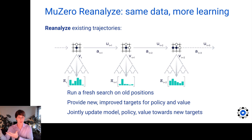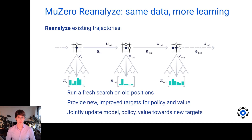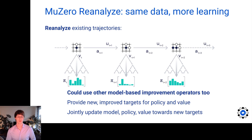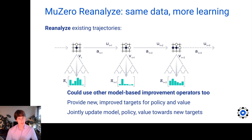Given this newly updated network, we can then go back and again compute fresh improved targets using the same trajectory data. Of course, this is not restricted to MuZero or MCTS-based improvement — this could be any model-based improvement operator. For simplicity, however, in this paper we're going to focus on the MuZero case.